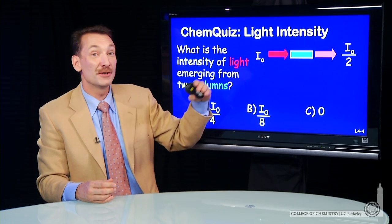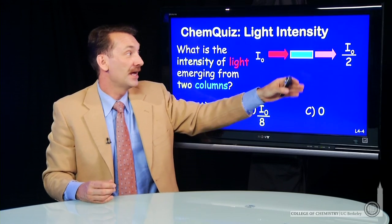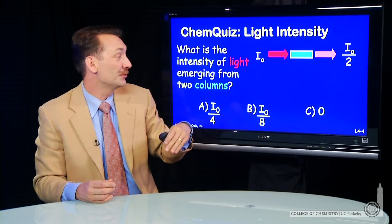If you have an intensity originally of I₀, you pass it through a filter, and you get an intensity of half that, I₀ over 2.